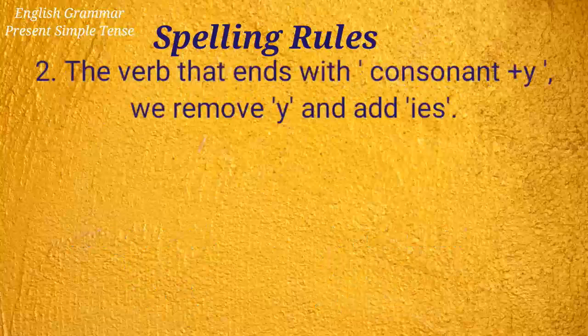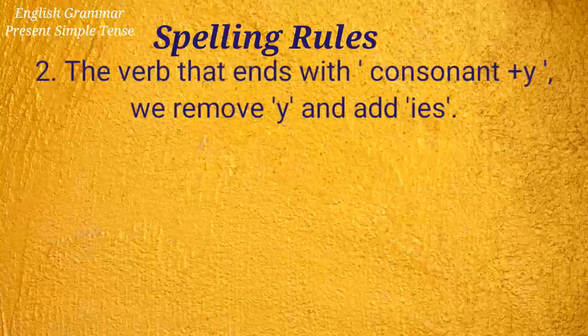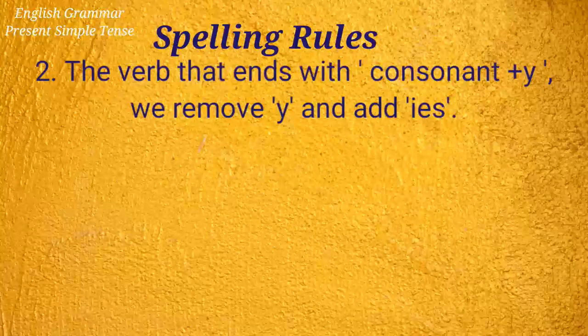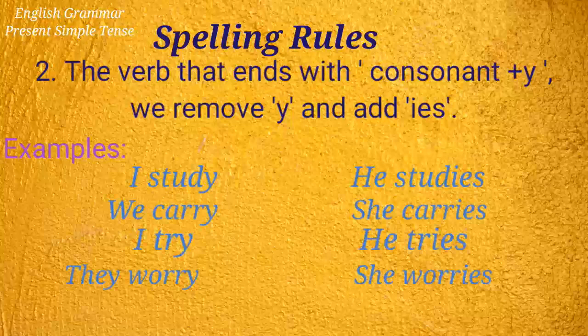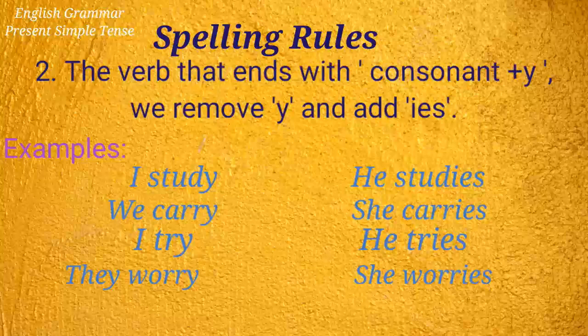For verbs that end with a consonant plus 'y', we remove the 'y' and add 'ies'. For example: I study, he studies; we carry, she carries; I try, he tries.